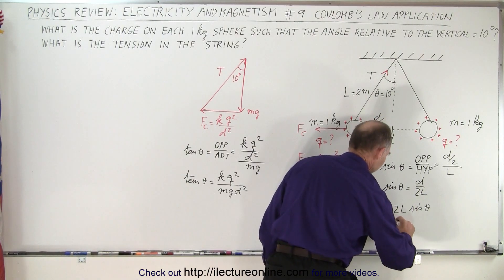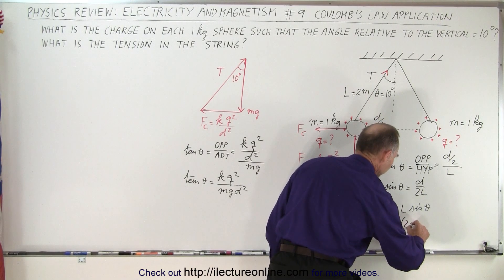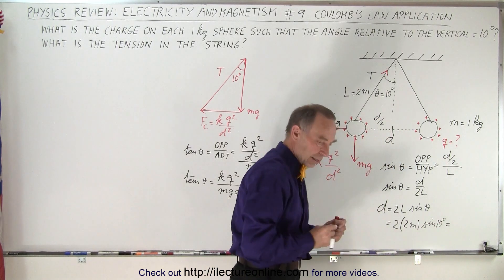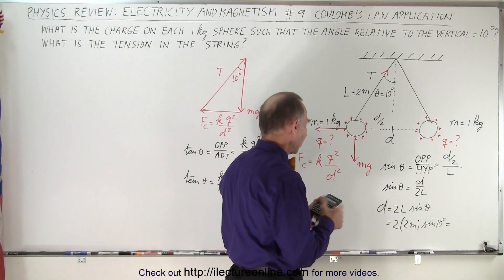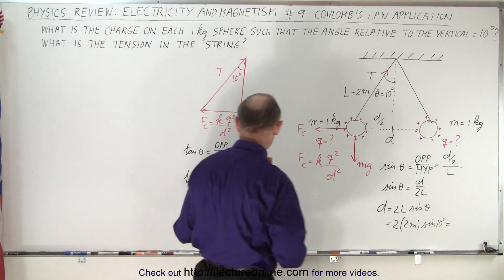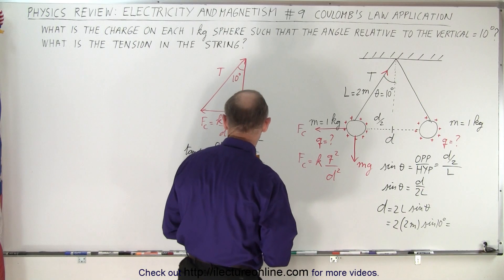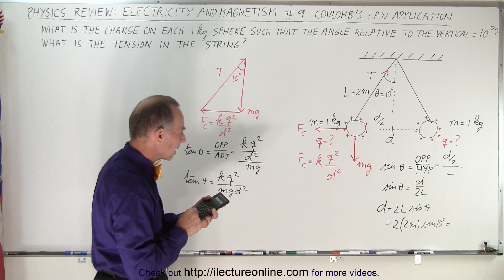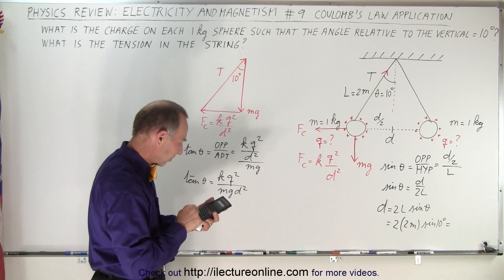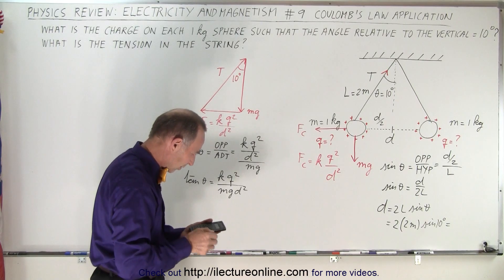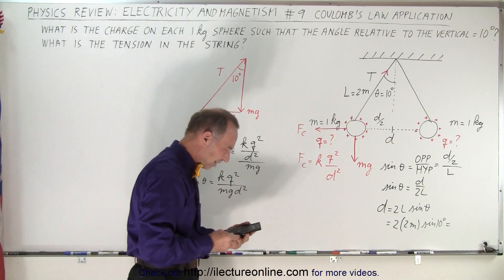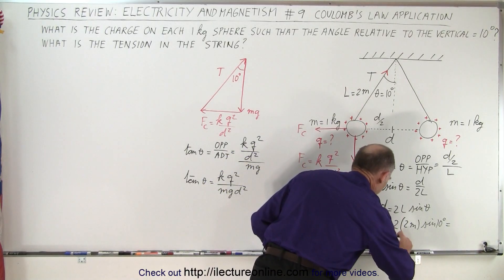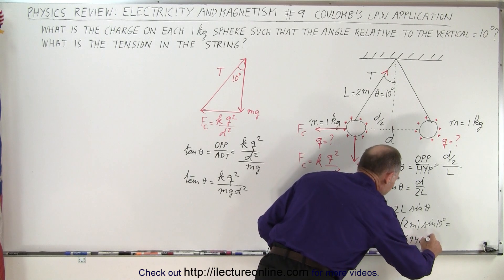And of course, we know what these are now, so this is equal to 2 times the length, which is 2 meters, times the sine of 10 degrees. And so we can see that right away we can find out what D is. So that would be 4 times the sine of 10 equals 0.6946 meters.